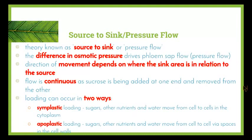Loading can occur in two ways: symplastic loading, where sugars, other nutrients, and water move from cell to cell via the cytoplasm; or apoplastic loading, where sugars, other nutrients, and water move from cell to cell via spaces in the cell wall. You just need to know that there are two different ways the source can load sugars into the phloem.